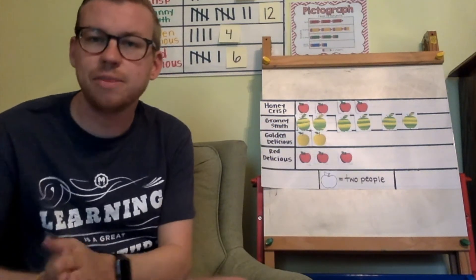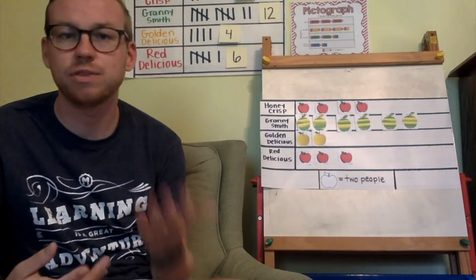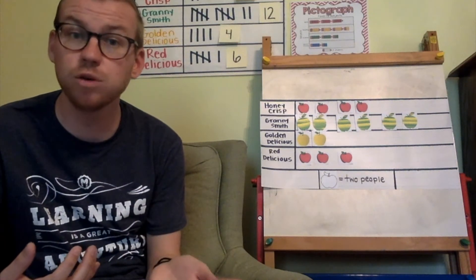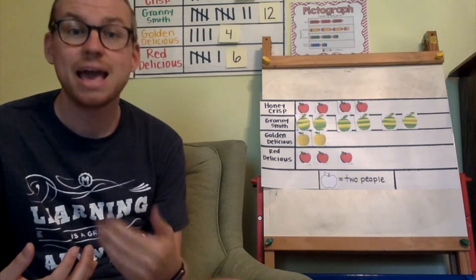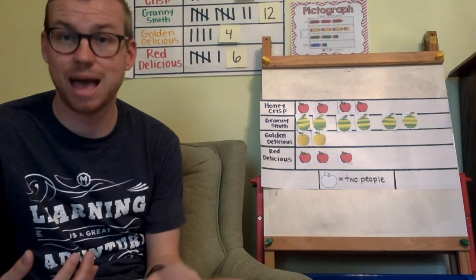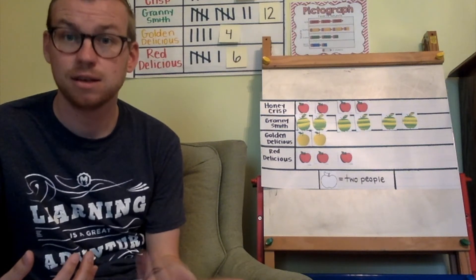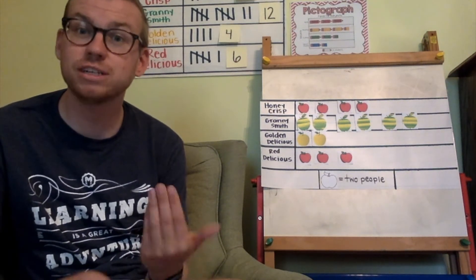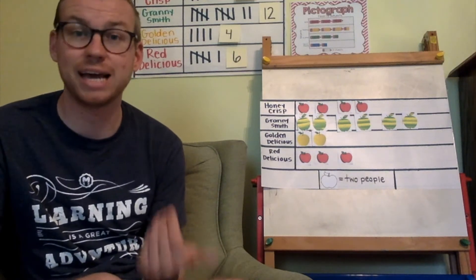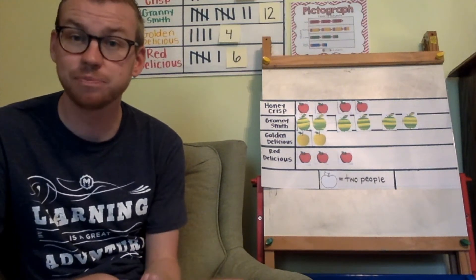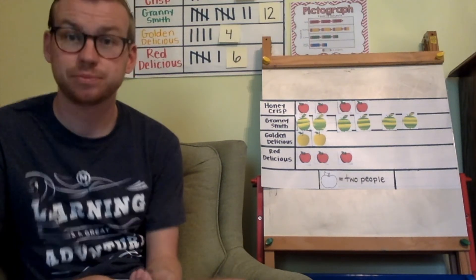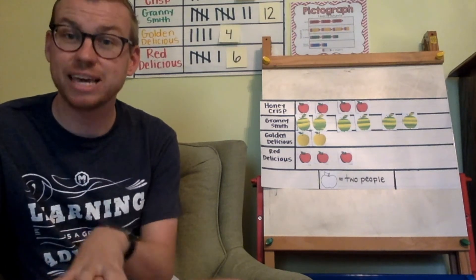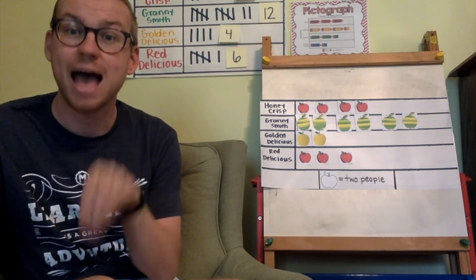By looking at this graph, I can tell right off that Granny Smith is the one with the most and Golden Delicious is the one with the least. But just like the line plot, in order to find out how many people liked each one, I have to count by twos and count each of the apples.